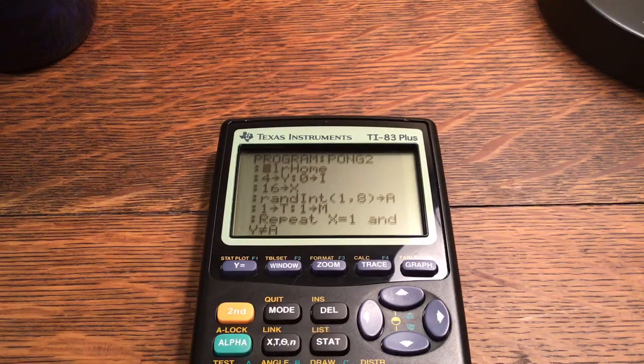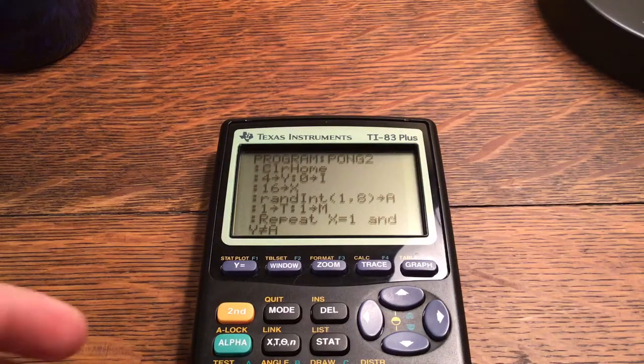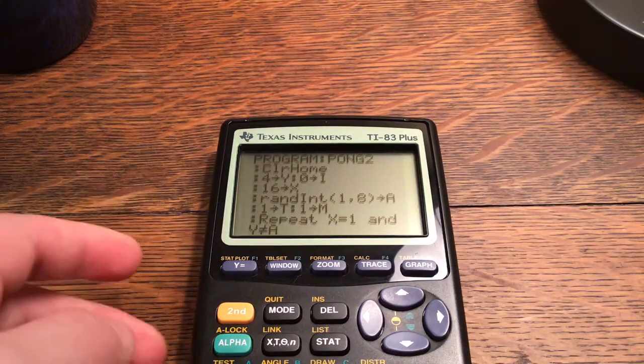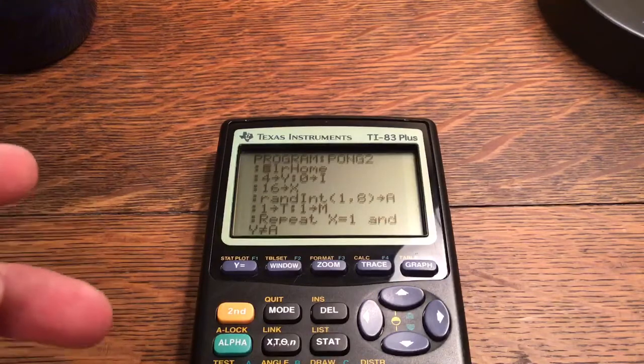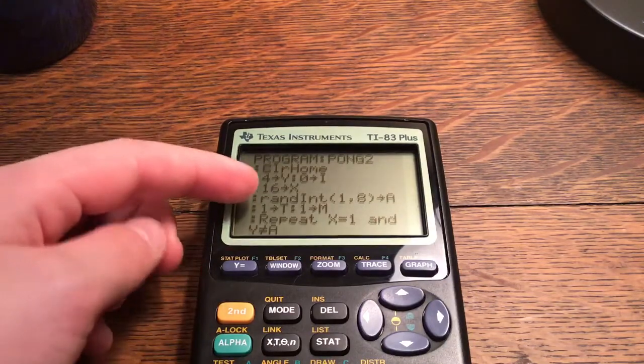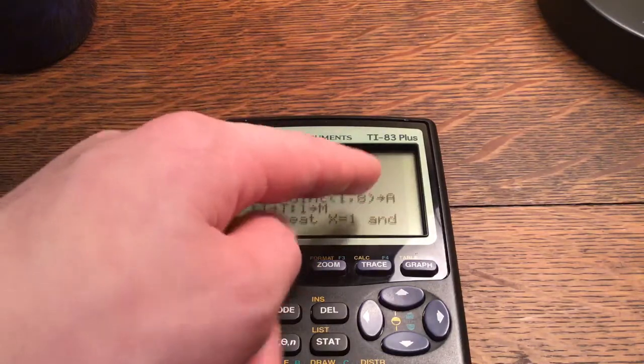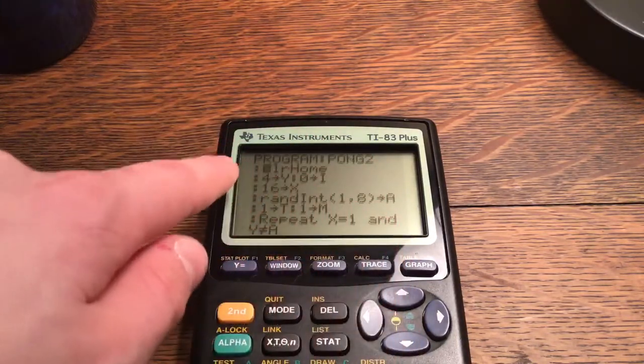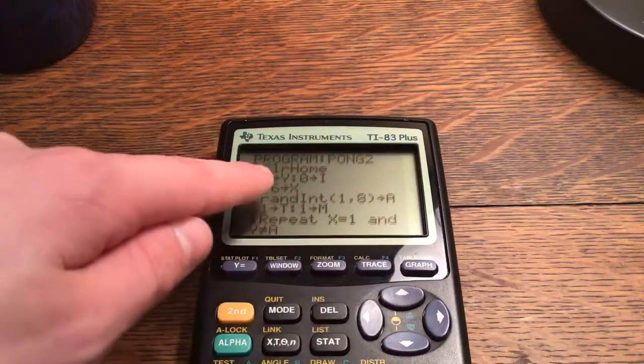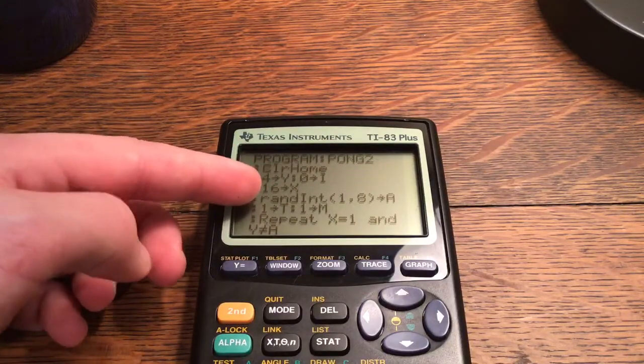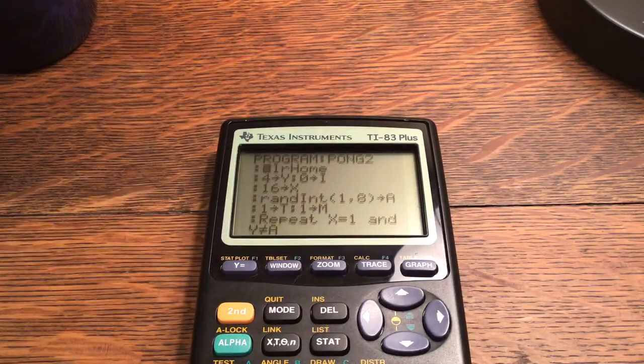If you want to do some testing with the program just to make sure you know that the ball and the paddle are working, you can take out the random integer 1 comma 8 store into A part, and you can just do like 4 store into A and then you'll just know where the ball comes so you can have the paddle right there and test it out to make sure it works.